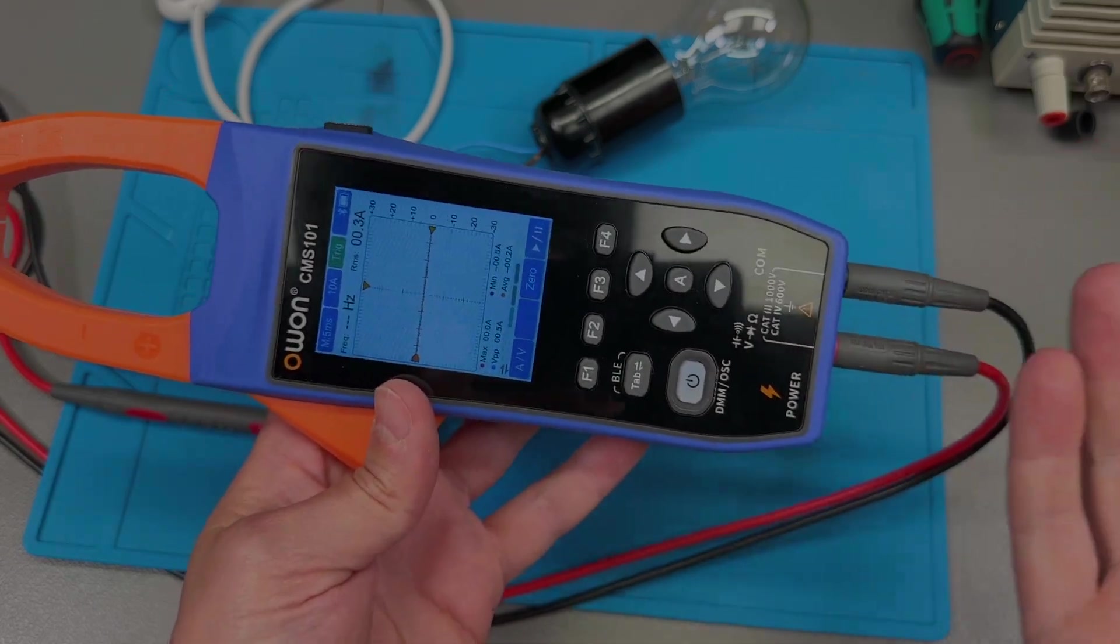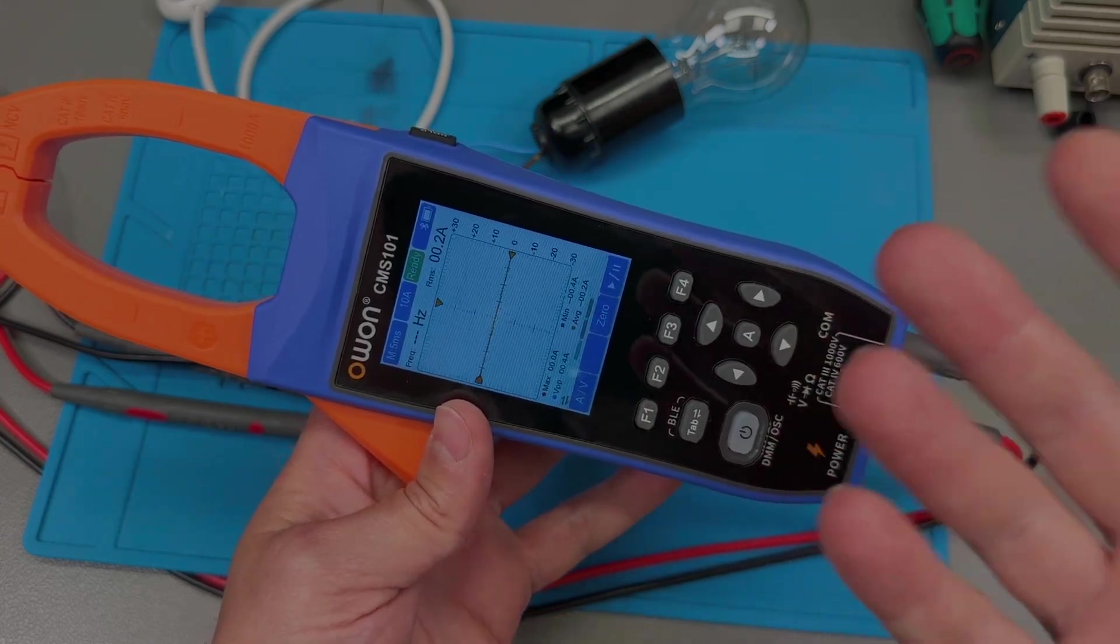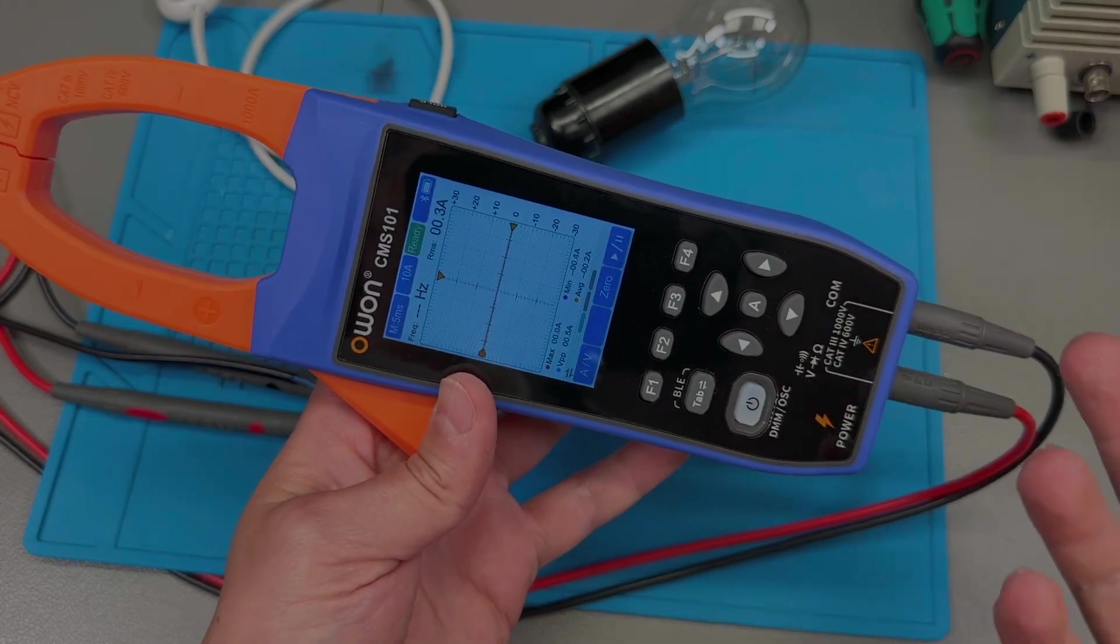But unfortunately, on the meter itself, there is no such functionality. Why? And this is also a question to you, my viewers. Do you think the same when you see such a design? Is this a wasted opportunity or not on Owon?